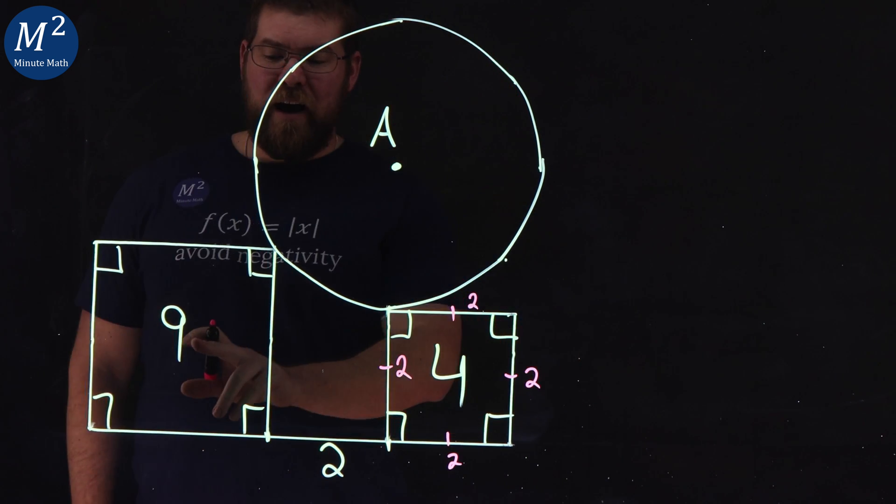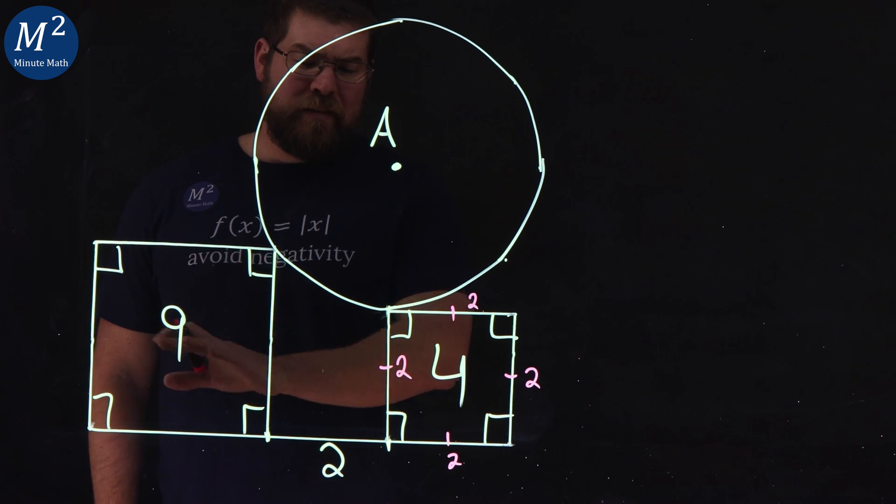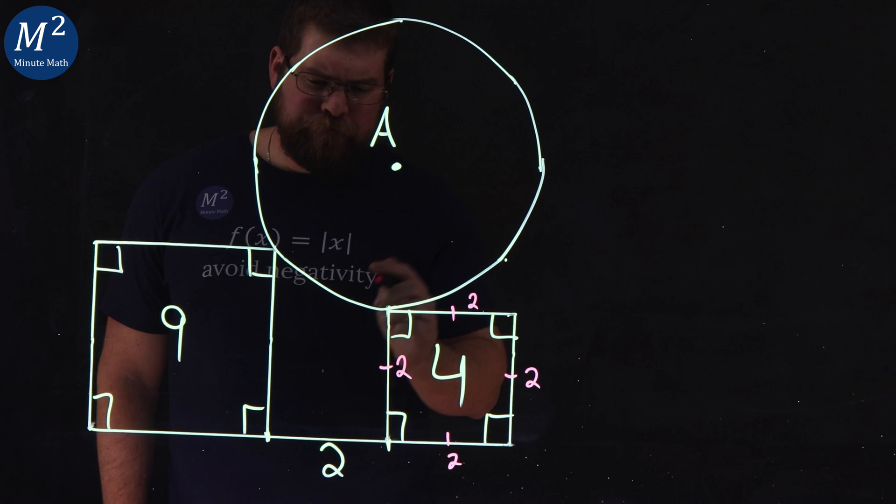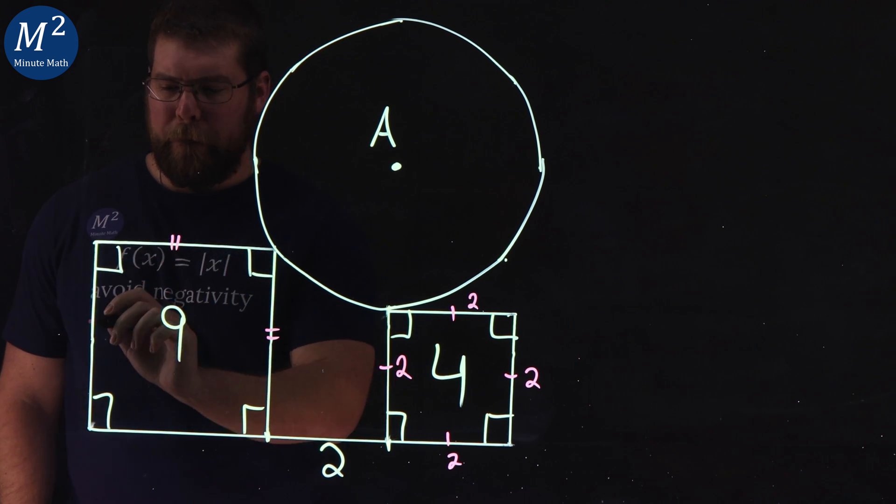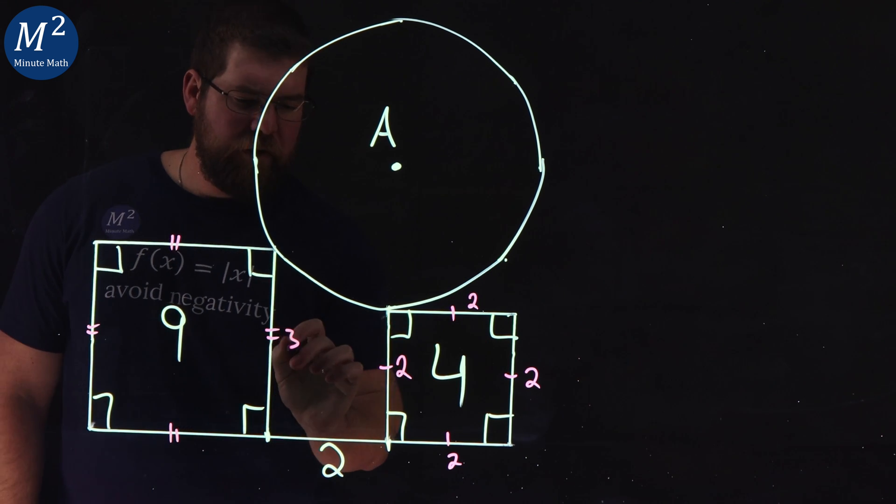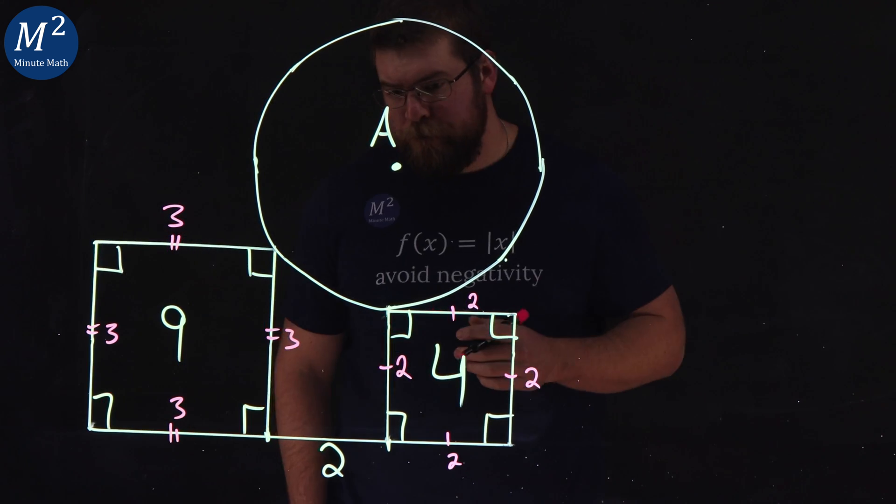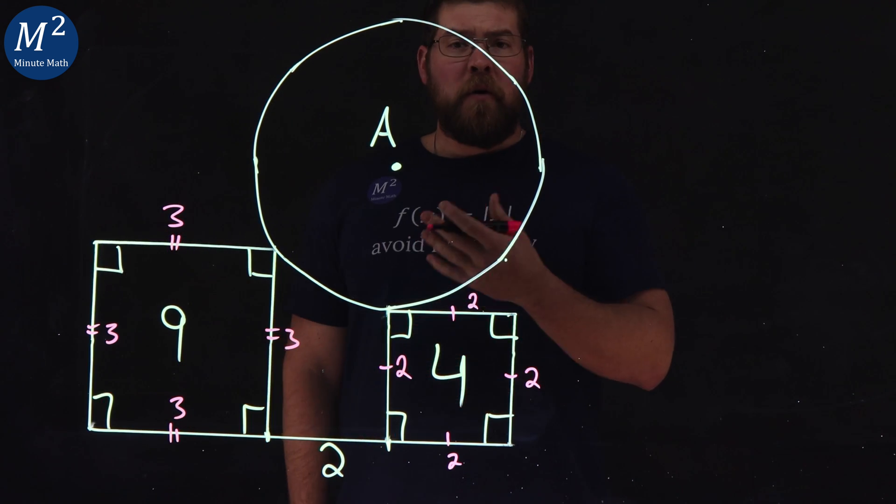Second one, same idea. Nine square units is the area here. Each side length is going to be three. Three times three is nine. We have three, three, three, and three. Now, where do we go from here?